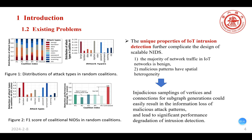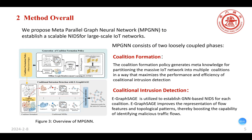What's more, the unique properties of IoT intrusion detection further complicate the design of scalable NIDS. As shown in the left figure, random sampling of vertices and connections for subgraph generation could easily result in the information loss of malicious patterns and lead to significant performance degradation of intrusion detection.